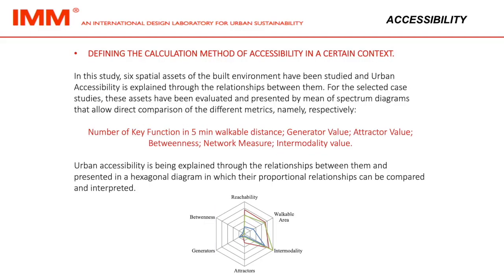Hence, following the approach used for the other key categories, we consider that the complexity of urban accessibility concept can be better rendered by a set of metrics instead of one single value. This study aims at providing quantitative measures that can pinpoint significant features of the spatial organization of the urban elements in order to characterize the concept of urban accessibility. In this study, six spatial assets of the built environment have been studied and urban accessibility is explained through the relationships between them.